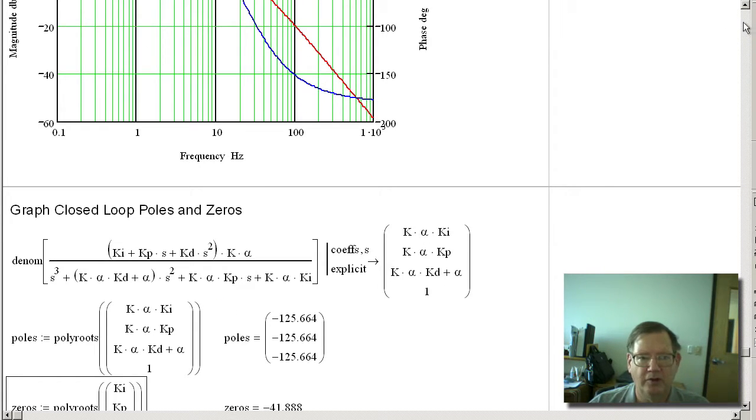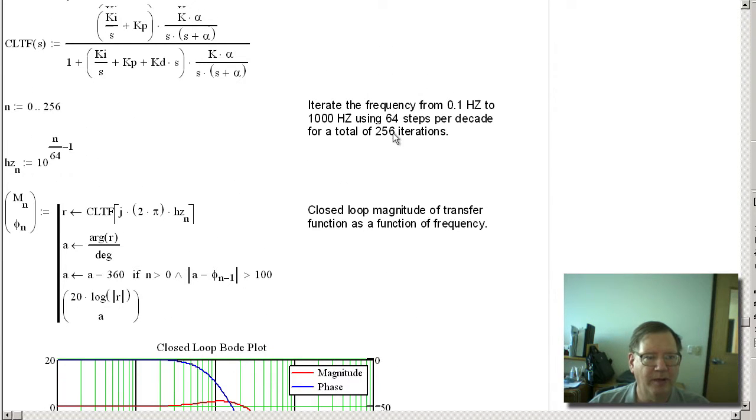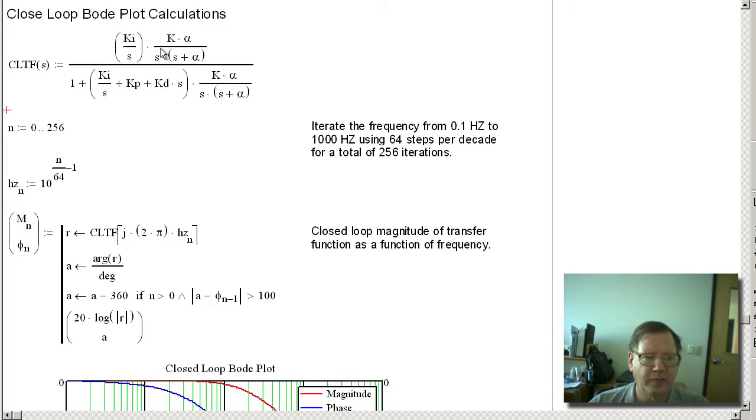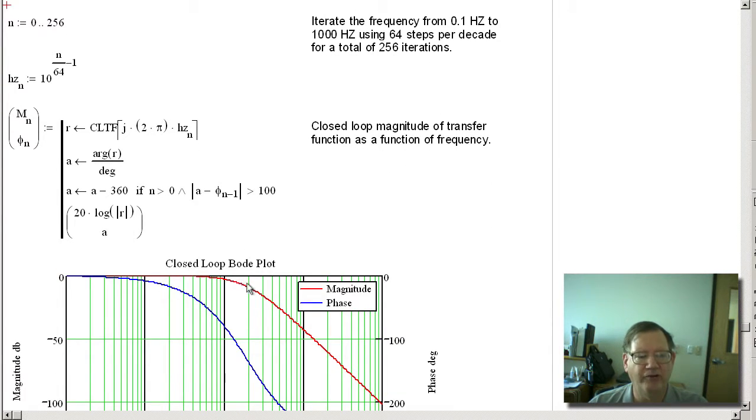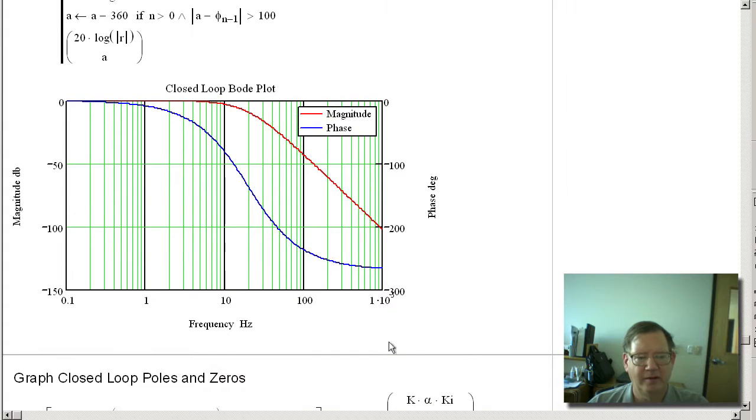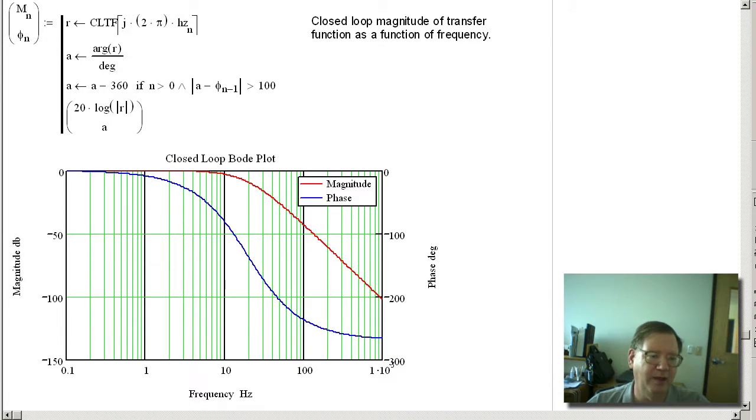And I'm going to change one more thing here. I'm going to remove Kp. Now there's going to be no zeros. And you can see that because there are no zeros, there's no overshoot. The magnitude never goes above zero dB. And down below, there just wouldn't be a zero.